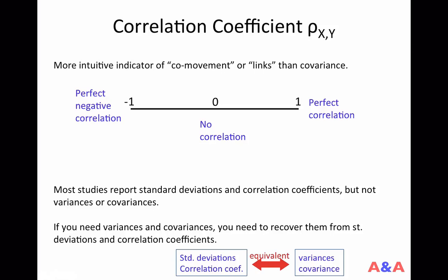In contrast, covariance — the size of the covariance really depends on the units of x and y. It depends on whether you use meter, centimeter, or kilometer for x or y. So the size of the covariance doesn't really tell you how large the correlation between x and y is. For that reason, the correlation coefficient is a more popular measure of co-movement between two random variables.